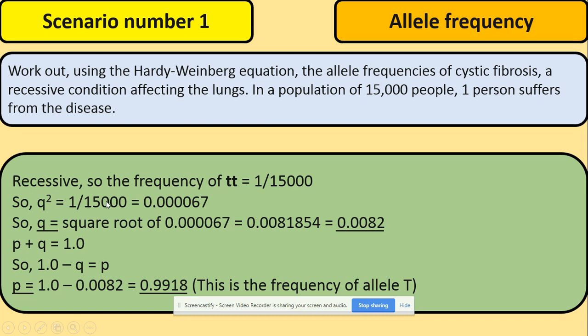The frequency of the recessive homozygous you can work out by one divided by the total population and that will be the answer. So knowing this we can square root our q squared to work out the allele frequency for this disease which will give us that answer.